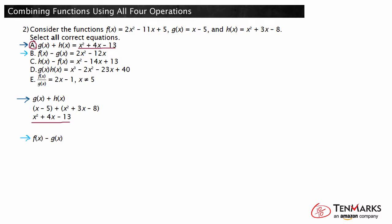Let's proceed to the second equation. Substituting the given expression in for f of x and g of x results in the quantity 2x squared minus 11x plus 5 minus the quantity x minus 5. Distributing the negative results in 2x squared minus 11x plus 5 minus x plus 5. Now we need to combine like terms. 2x squared cannot be combined with any other term. Combining negative 11x and negative x gives negative 12x, and combining 5 and 5 gives 10. So, f of x minus g of x is 2x squared minus 12x plus 10. This is different from what is given in the answer choice.